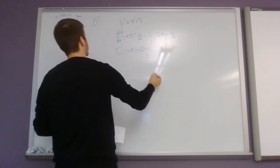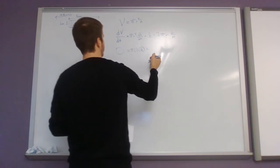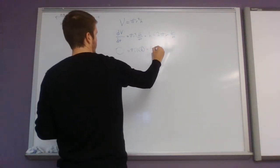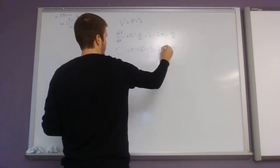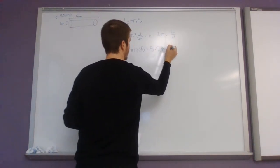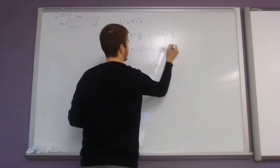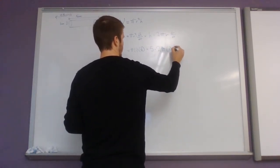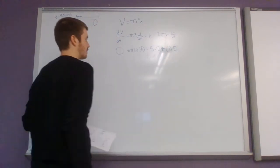And plus height again, let's see, plus height is 5 times 2 pi. Radius is again 1. And dr dt we don't know.